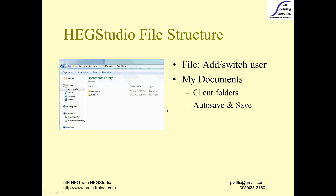HEG Studio is a simple piece of software that runs on a Macintosh or a Windows computer that can be used for doing HEG training. Let's take a quick look at it. When you install HEG Studio, you're going to place the folder inside the folder called Program Files on your Windows computer. You'll create a shortcut from the application and put that on your desktop so that you can open it easily.